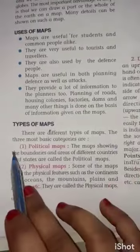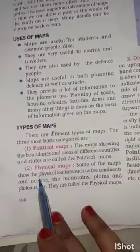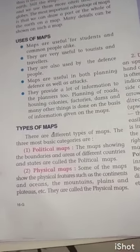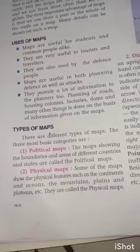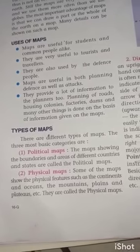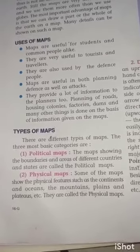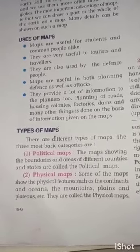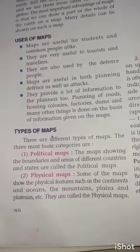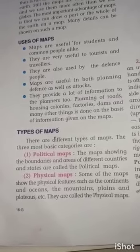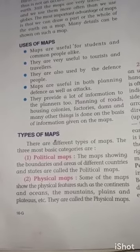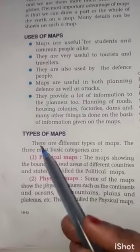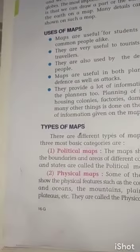Now mark the definitions for political map and physical map — both are important. Political maps show the boundaries and areas of different countries and states. Physical maps show physical features such as continents, oceans, mountains, plains, and plateaus. Learn both definitions as they are very important.